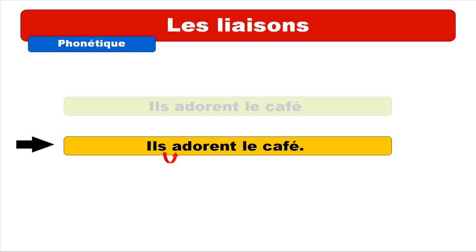So actually, liaisons means link. So if you want to link the words, in this case you will get ils adorent le café. You can see the difference between the first one — ils adorent le café — and the second one — ils adorent le café. So let's see now six examples.